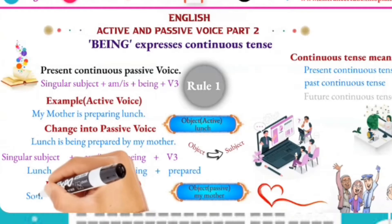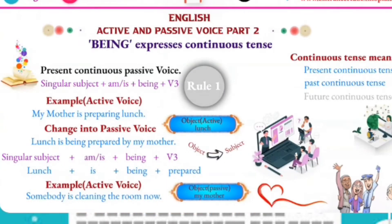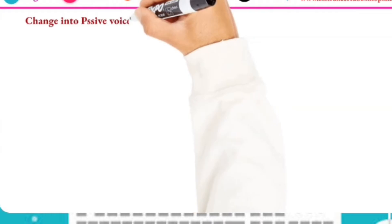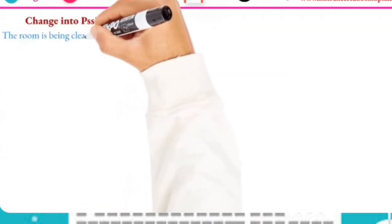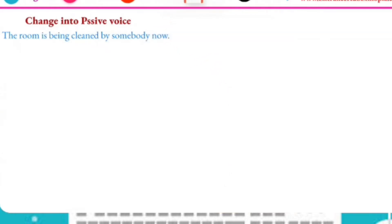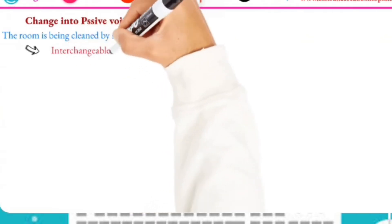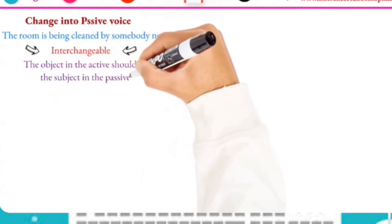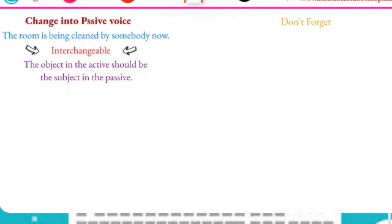Another example of the present continuous passive form: the room is being cleaned by somebody now. This follows the same present continuous passive structure we discussed.